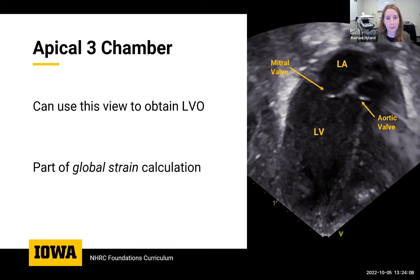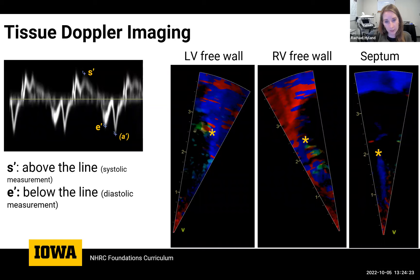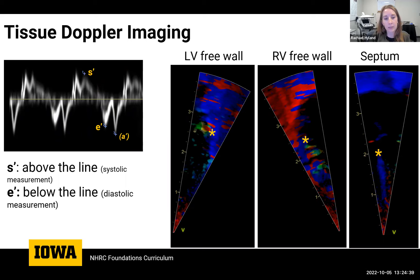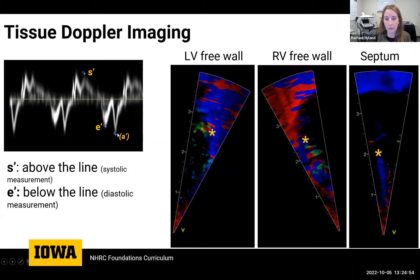In the apical three-chamber, this is your backup view if your LVO isn't well aligned in the five-chamber — you can do a pulse wave here to get your LVO. This view is also part of your global strain calculation. For tissue Doppler imaging, we're looking at an S-prime and E-prime for measurements on the LV free wall and the septum, and an S-prime on the RV free wall. Key things to know: the S-prime needs to be the most robust peak above the line, and the E-prime is the first of two quite clear, well-differentiated peaks below the line. If you can only see one lower peak, these are likely fused and you cannot report an E to E-prime.